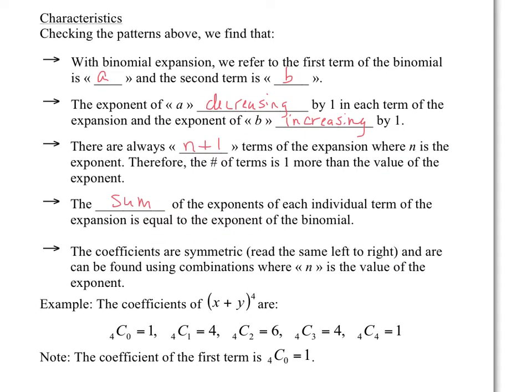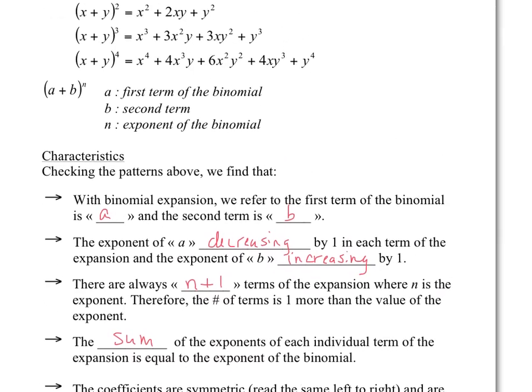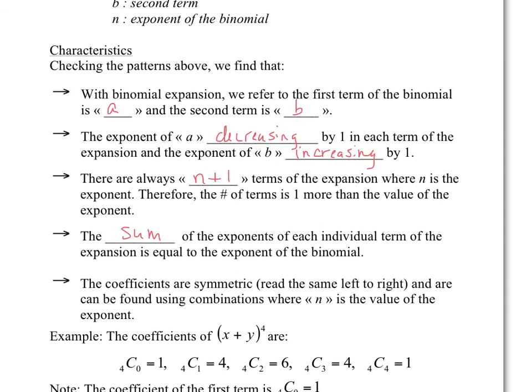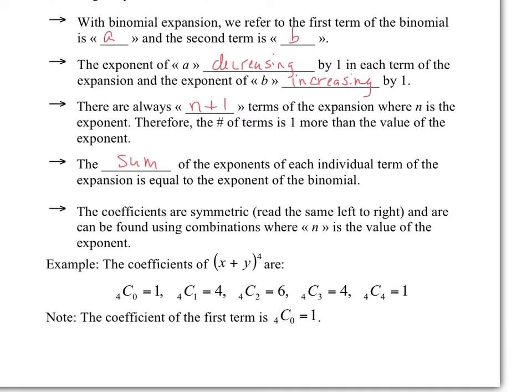Now the coefficients. To identify them: for power 1 you have 1, 1; for power 2 you have 1, 2, 1; for power 3 you have 1, 3, 3, 1; for power 4 you have 1, 4, 6, 4, 1. These are symmetric — they read the same from left to right. So 1, 4, 6, 4, 1 for example are the coefficients of x plus y to the power of 4.